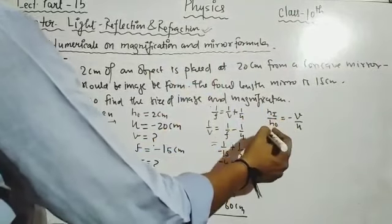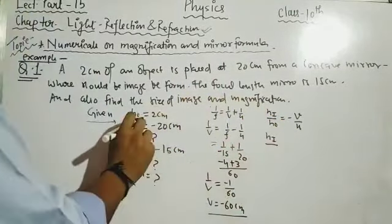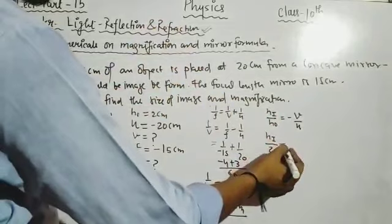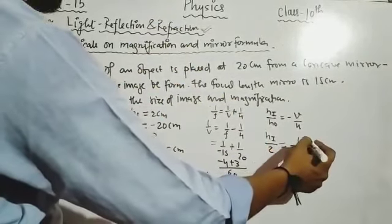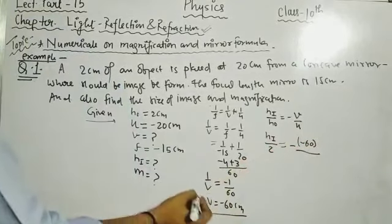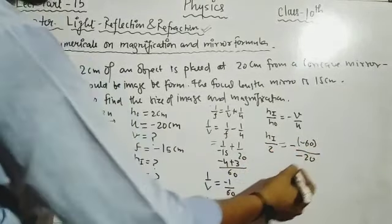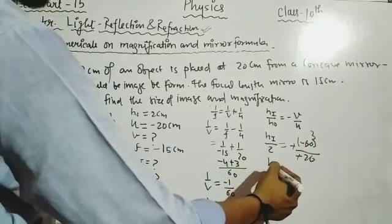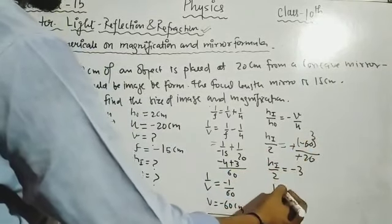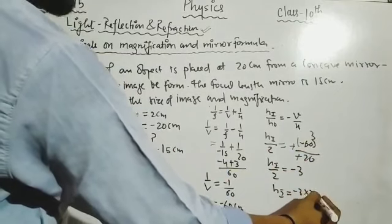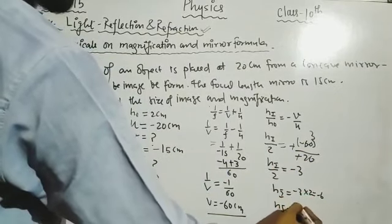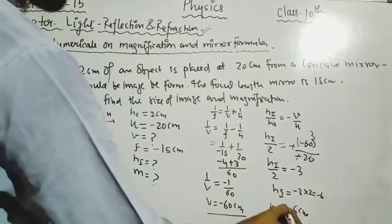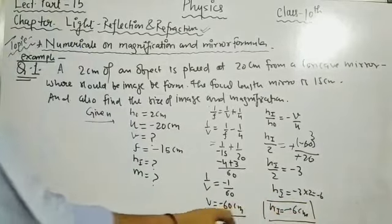Now to find the height of image hi: using hi/h₀ = -v/u, so hi = h₀ × (-v/u) = 2 × (-(-60)/(-20)) = 2 × (-3) = -6 cm. So hi = -6 cm, which means the image is inverted. The image position v = -60 cm means the image is 60 cm in front of the mirror.